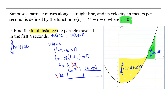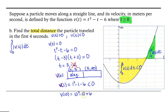Pick a test value in [0, 3] — say t = 1: v(1) = 1 - 1 - 6 = -6, which is negative. So velocity is negative on [0, 3]. For [3, ∞), pick t = 10: v(10) = 100 - 10 - 6 = 84, which is positive. So velocity is positive on [3, ∞).